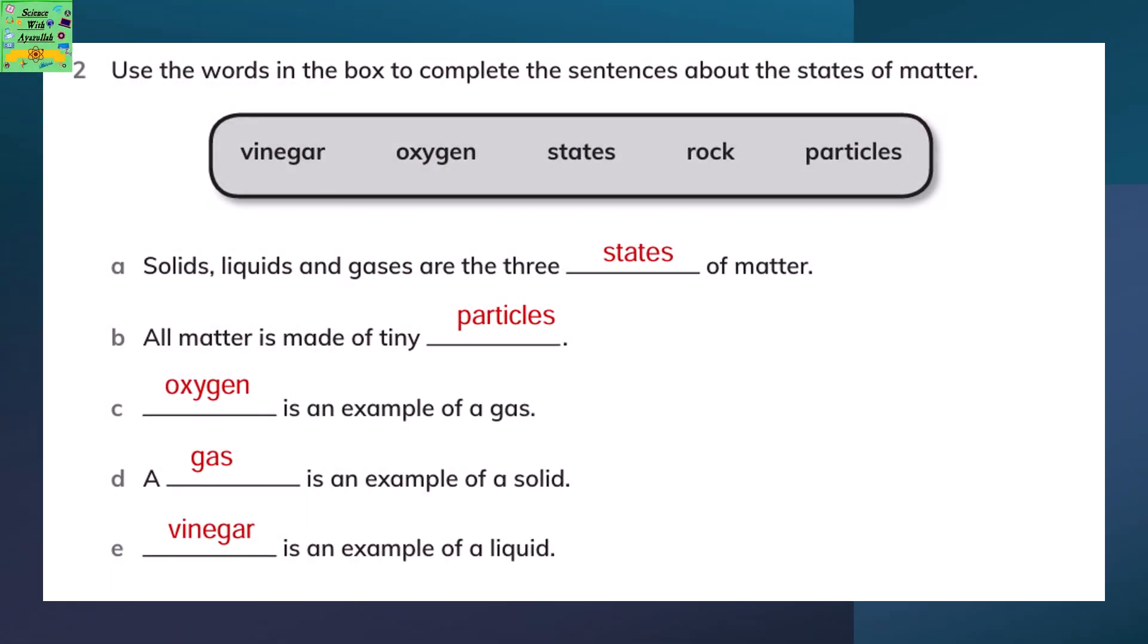Use the words in the box to complete the sentences about the states of matter. Solids, liquids and gases are the three states of matter. All matter is made of tiny particles. Oxygen is an example of a gas. A rock is an example of a solid. And vinegar is an example of liquid.